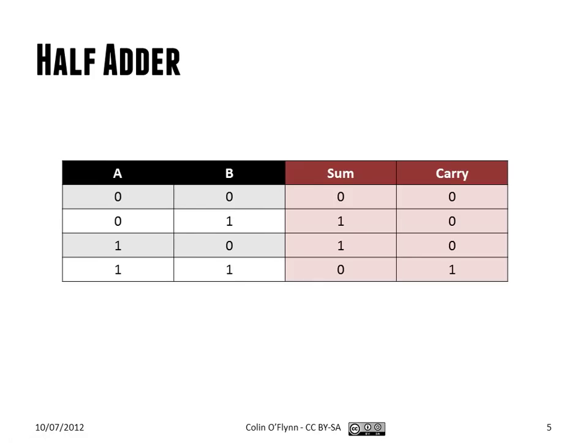Going through all the options, there are four possibilities. Zero and zero gives a sum of zero, carry of zero. If one of the inputs is one, the sum is one and the carry is zero. And if both inputs are one, the carry is one.